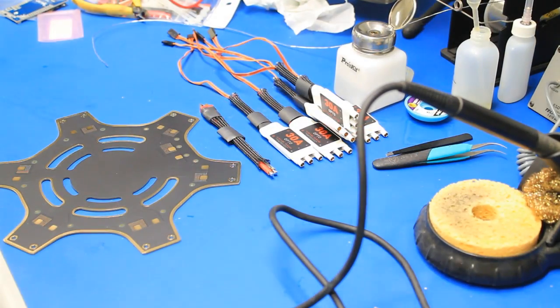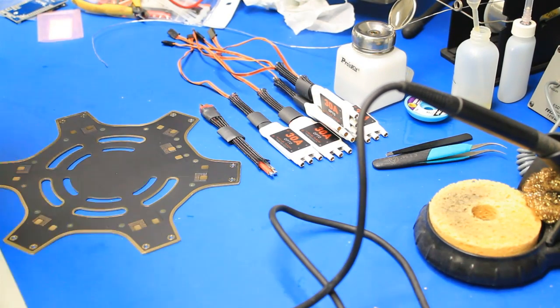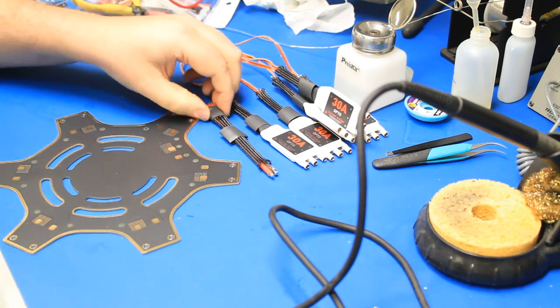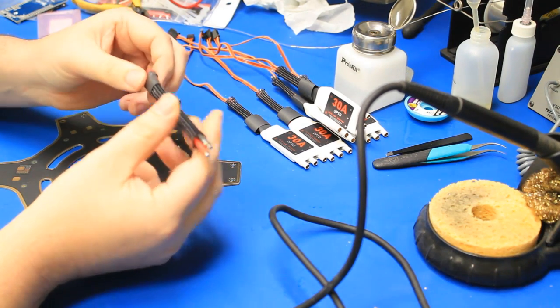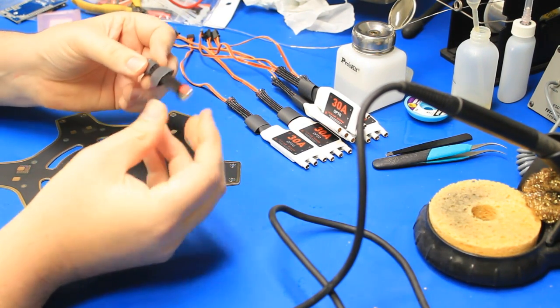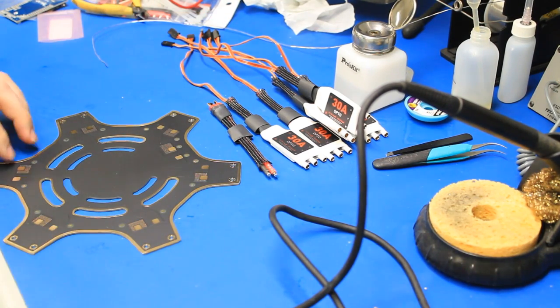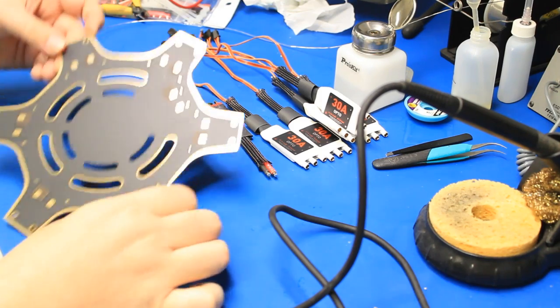All right, we've moved over to the solder station. We've got all the ESCs ready to be soldered. I went ahead and made a quick Dean's plug. Put some shielding over that also. Get the solder. Tend the tips already. Get that all ready. And then we have our board.